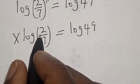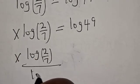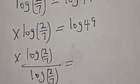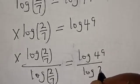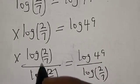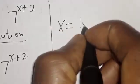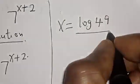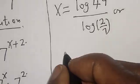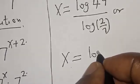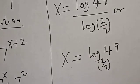Now let's divide both sides by log of 2 over 7. This gives us s is equal to log 49 divided by log of 2 over 7. Or equivalently, s is equal to log base 2 over 7 of 49. That is our final answer.